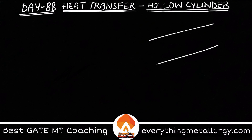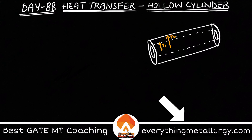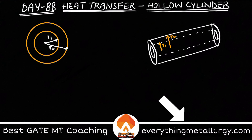A hollow cylinder has an inner radius and an outer radius. Looking at the cross-section, we define r1 as the inner radius and r2 as the outer radius. The hollow space is in the center, and surrounding it is a solid thick cylindrical wall between r1 and r2.